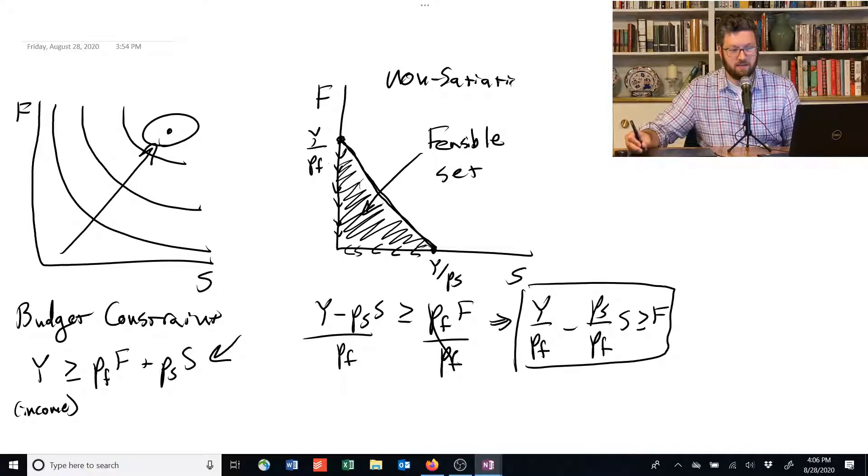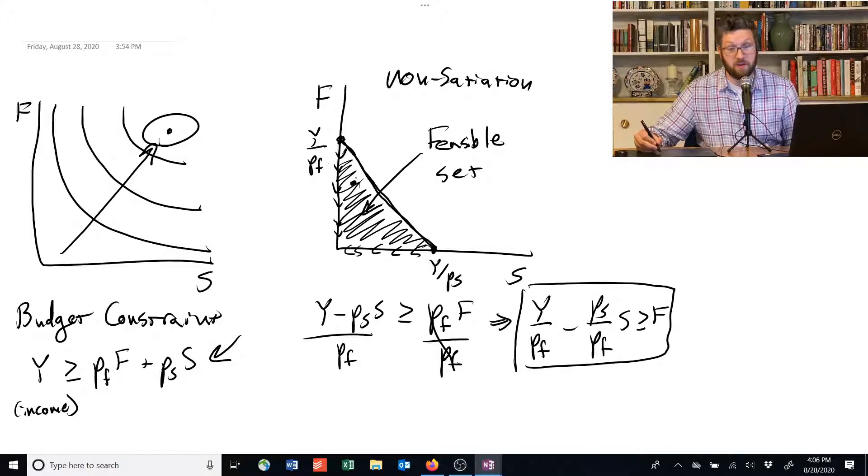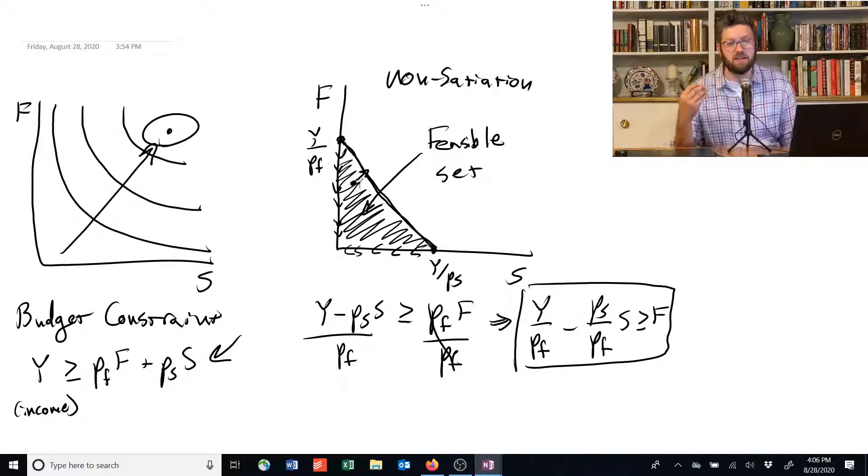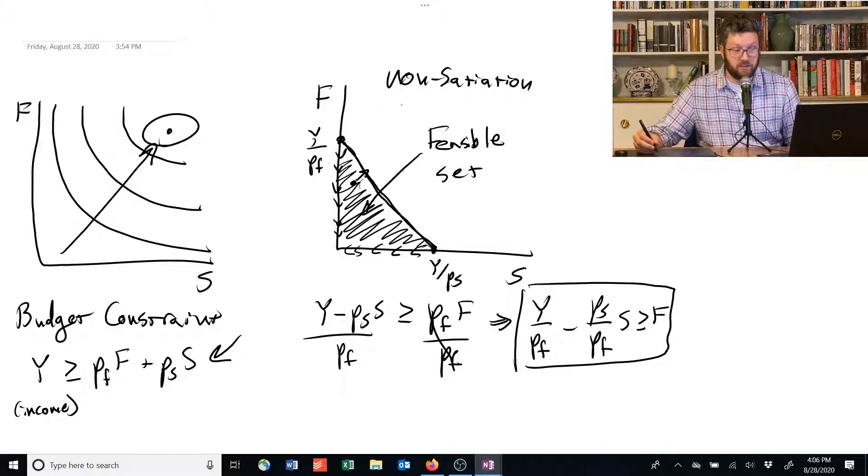If you're inside, if you're in this sort of shaded area, like suppose you were here, well, that means you could have more food and more shelter without giving anything up except money. But money isn't, in this example, the only thing you can spend money on is food and shelter. It has no inherent value.